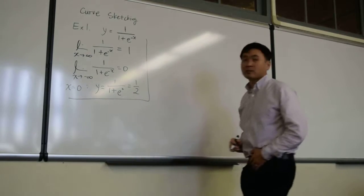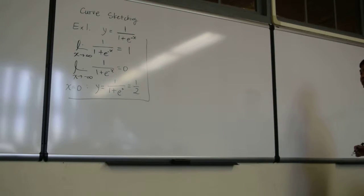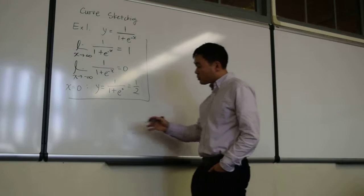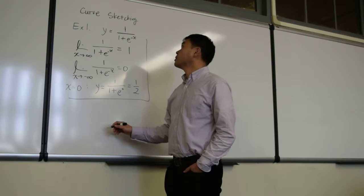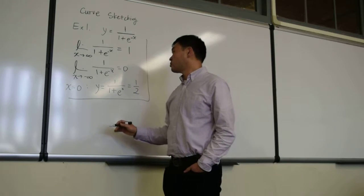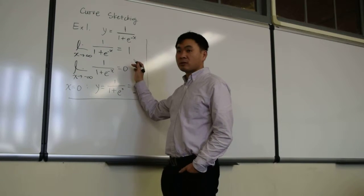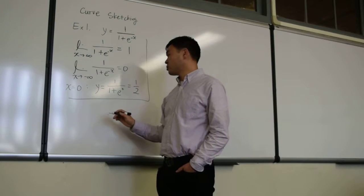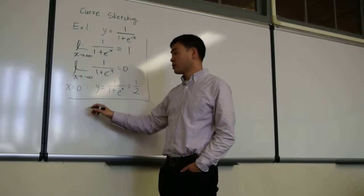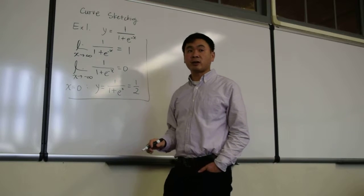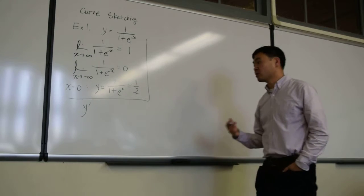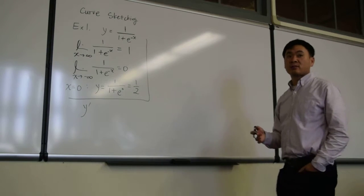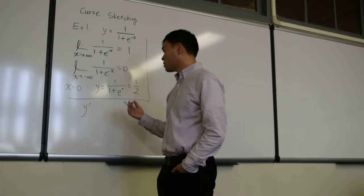I showed you the graph before without really explaining why, and that's the part we're going to do today. Curve sketching makes use of the limit information, some points that you know, and along with that, the derivative and its second derivative. The derivative tells us if it's increasing or decreasing; the second derivative tells us how it's curved — is it concave up or down?